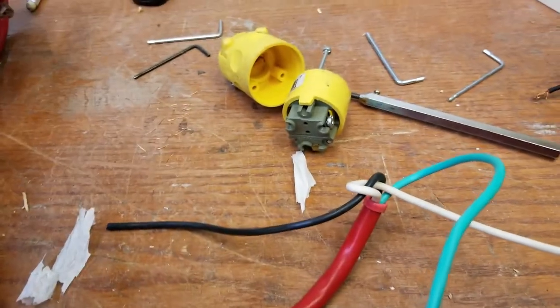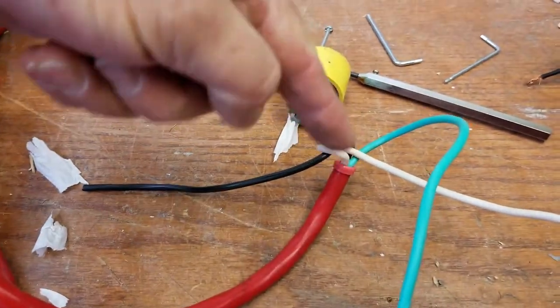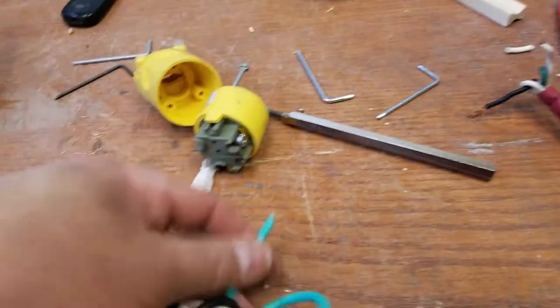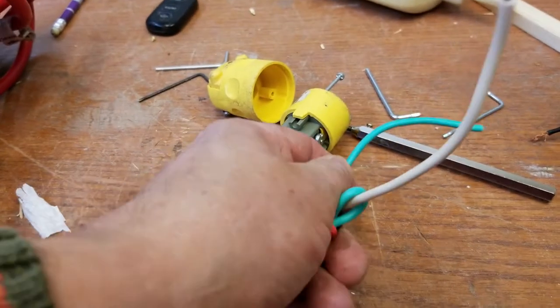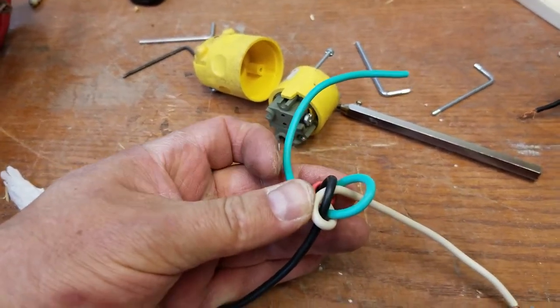Then for the green, you loop it around and then underneath the white, over top of the white and underneath it. And that gives you your strain relief knot.